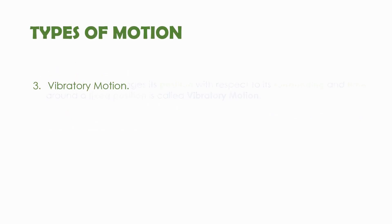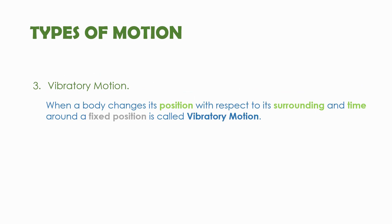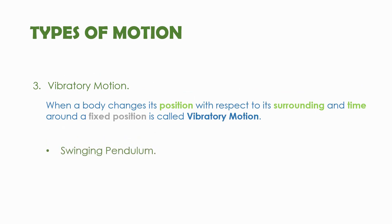The third type is vibratory motion, where the change in position occurs around a fixed position. An example is a swinging pendulum — any object that is swinging can be considered as having vibratory motion.